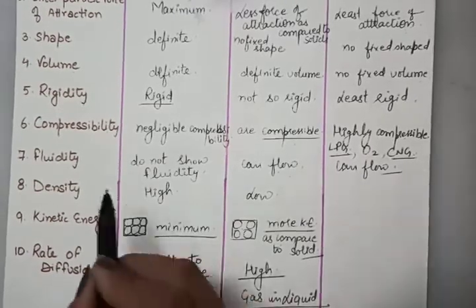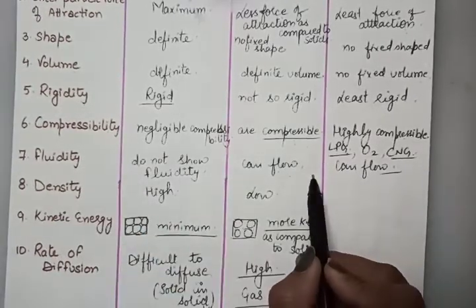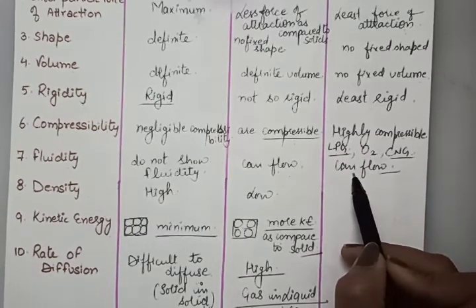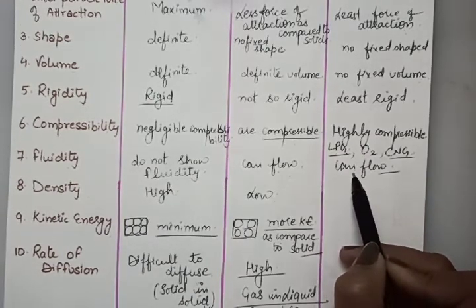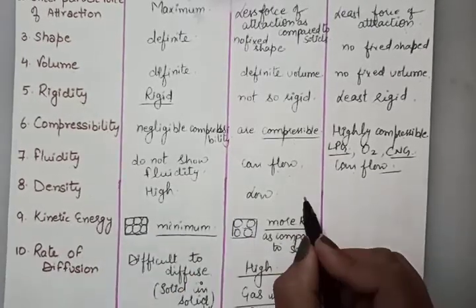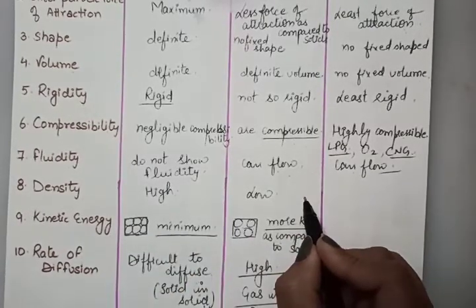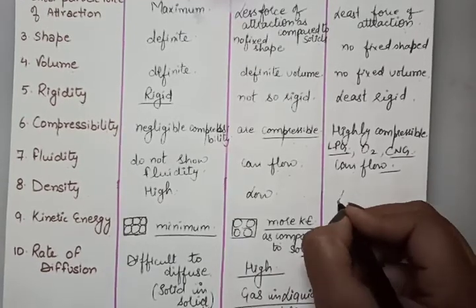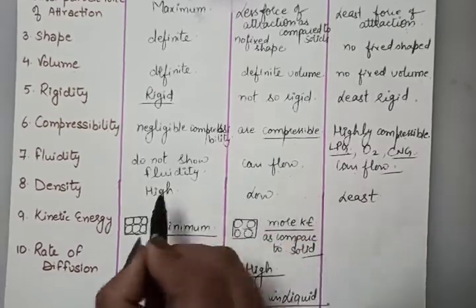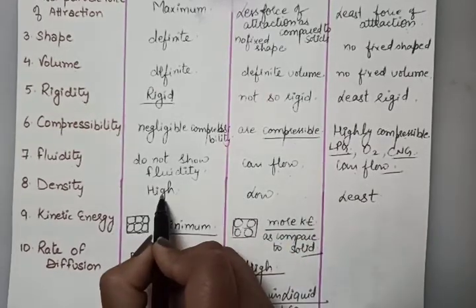The next is fluidity — gases are able to flow, that's why they fill the whole container. The next is density — gases have the least density as compared to liquids and solids.